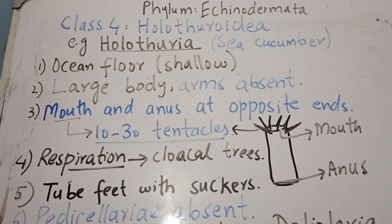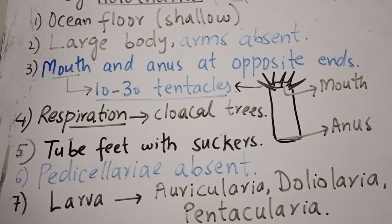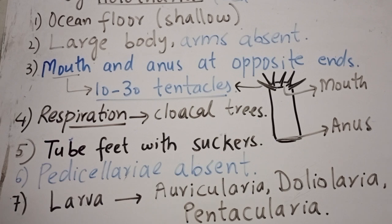The mouth of sea cucumbers is surrounded by 10 to 30 tentacles. Respiratory organs are cloacal respiratory trees — the cloaca has respiratory trees used for gas exchange. Tube feet are present as locomotory organs and are provided with suckers. Pedicellariae are absent. Development is indirect through different larval stages: the larva may be known as auricularia, doliolaria, or pentacularia.